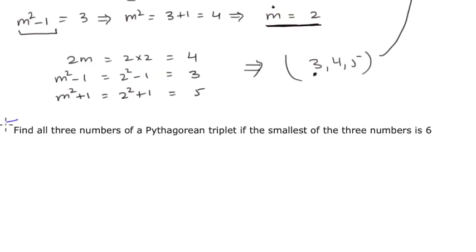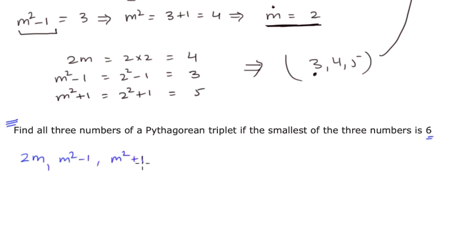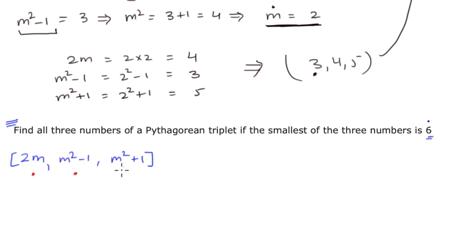The second example is: find all three numbers of a Pythagorean triplet if the smallest of the three numbers is 6. Looking at the general form — 2m, m squared minus 1, and m squared plus 1 — the statement says the smallest of the three numbers is 6. Out of these three, which will be the smallest? It could be either 2m or m squared minus 1. m squared plus 1 is definitely going to be bigger than m squared minus 1, so it is definitely not the smallest.